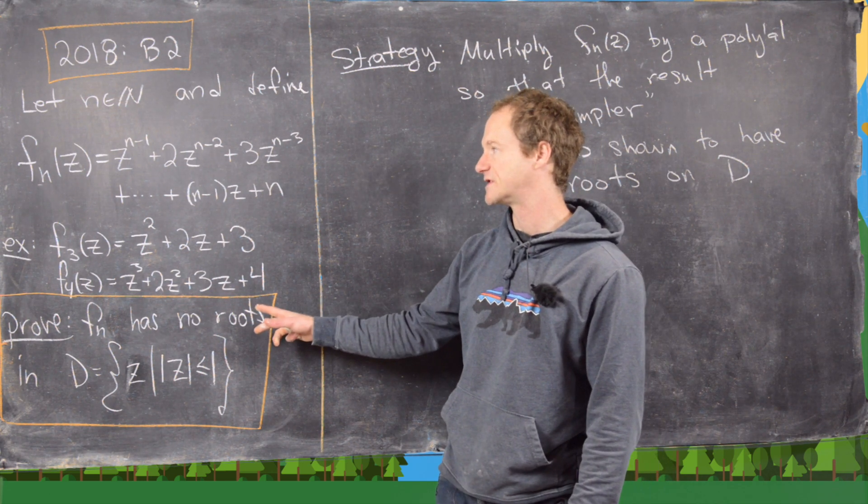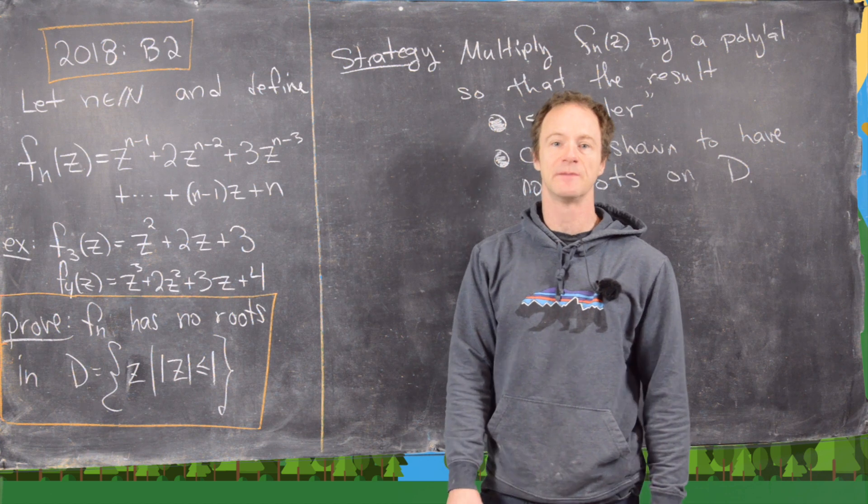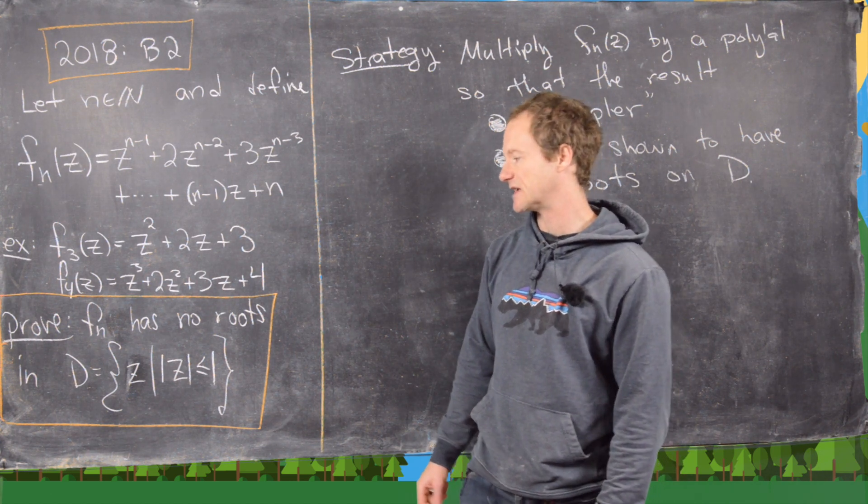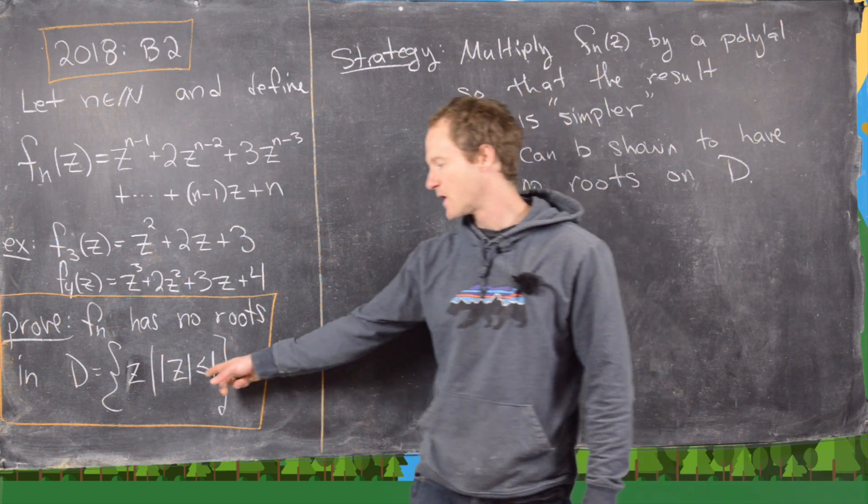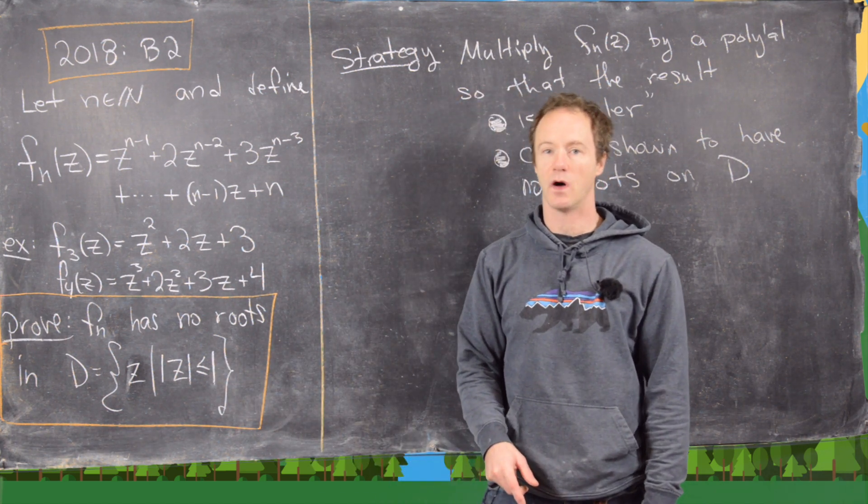Our goal is to show that fn has no roots in the closed unit disk, in other words, the set of all complex numbers z where the modulus of z is less than or equal to 1.